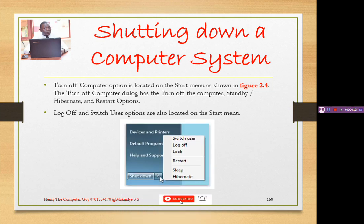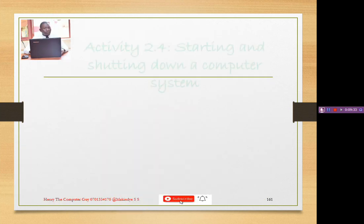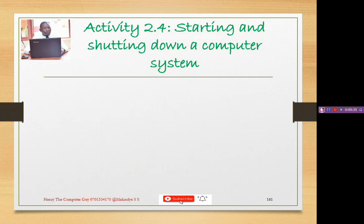Log off and switch user options are also located on the start menu as we have seen. The figure 2.4 shows the start menu practically — you come to shutdown and click it. We also have activity 2.4 on starting and shutting down a computer system.